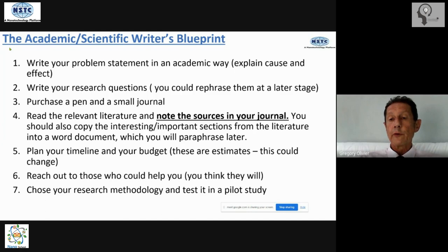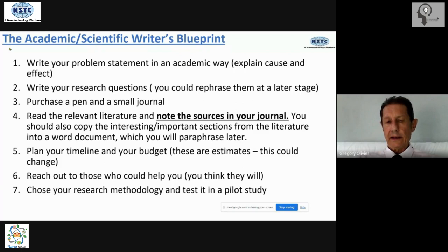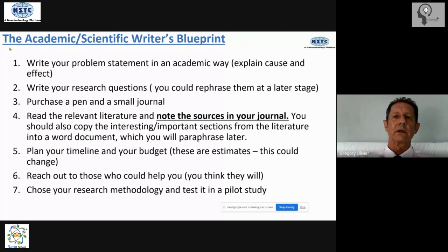Step number four of the blueprint: read the relevant literature. This is most important. As you're reading and deciding to use some information in your paper, note the sources in your journal. I urge you to copy and paste the interesting parts you wish to use into a separate document, which you could title 'Chapter Two' or 'Lit Review' — whatever you like.